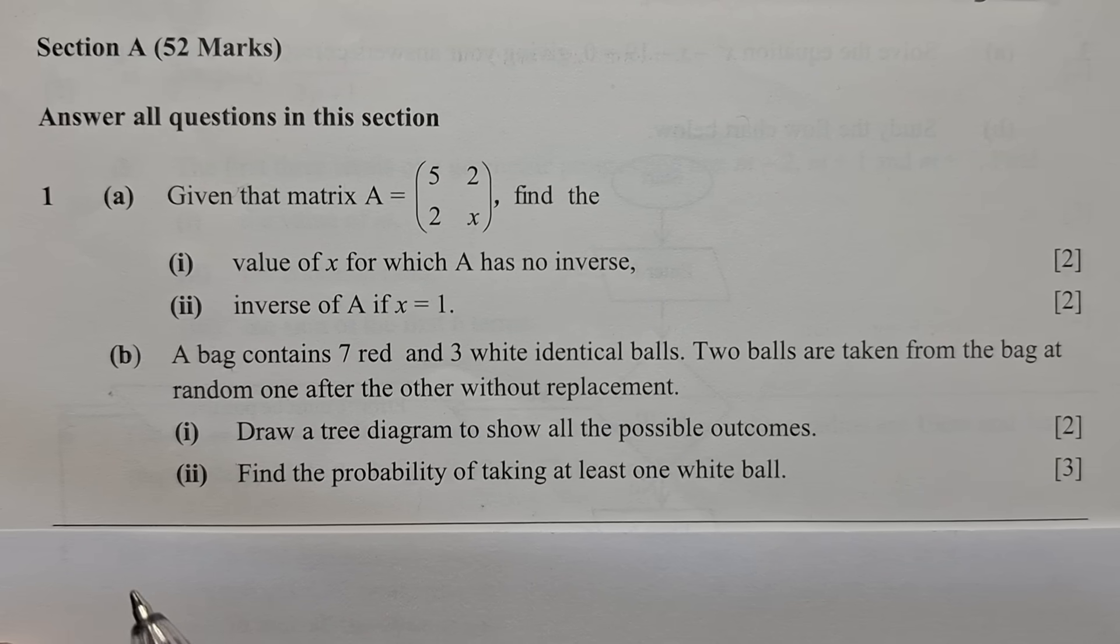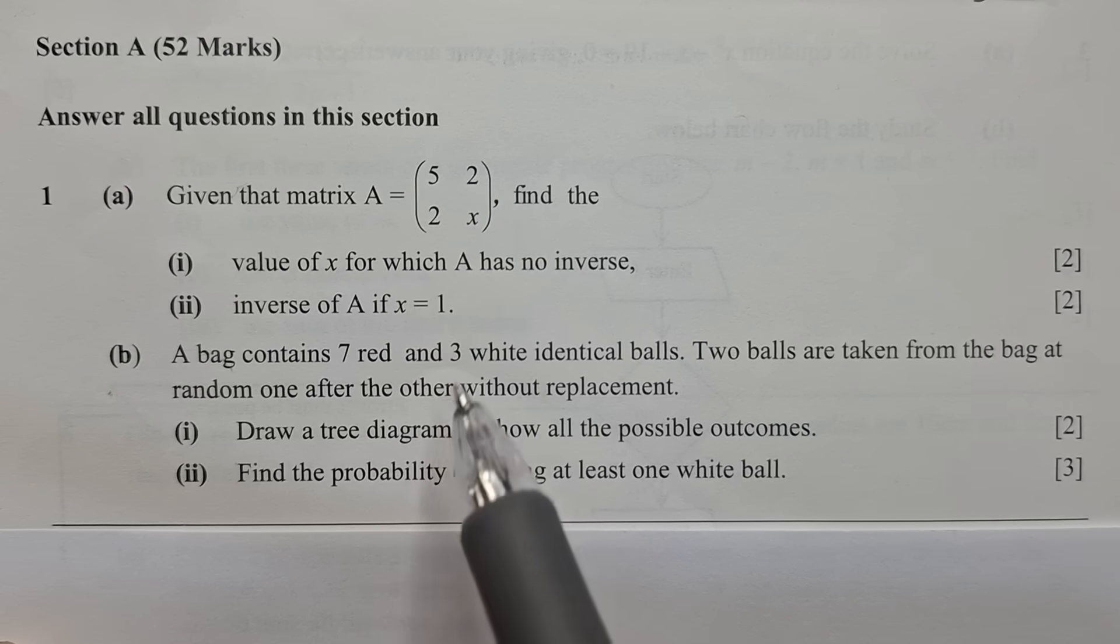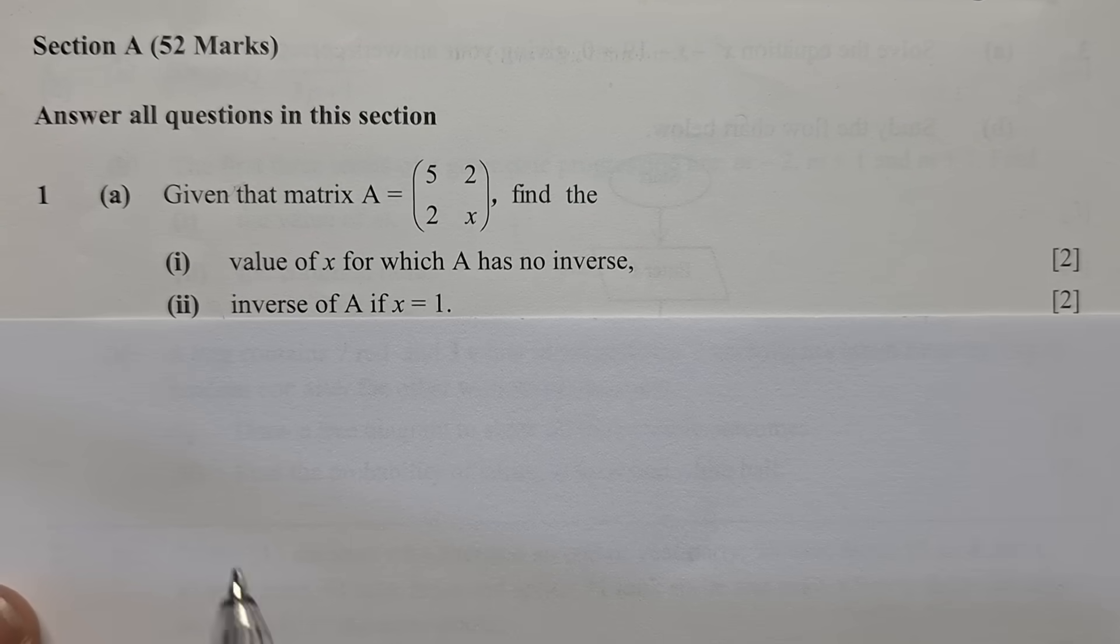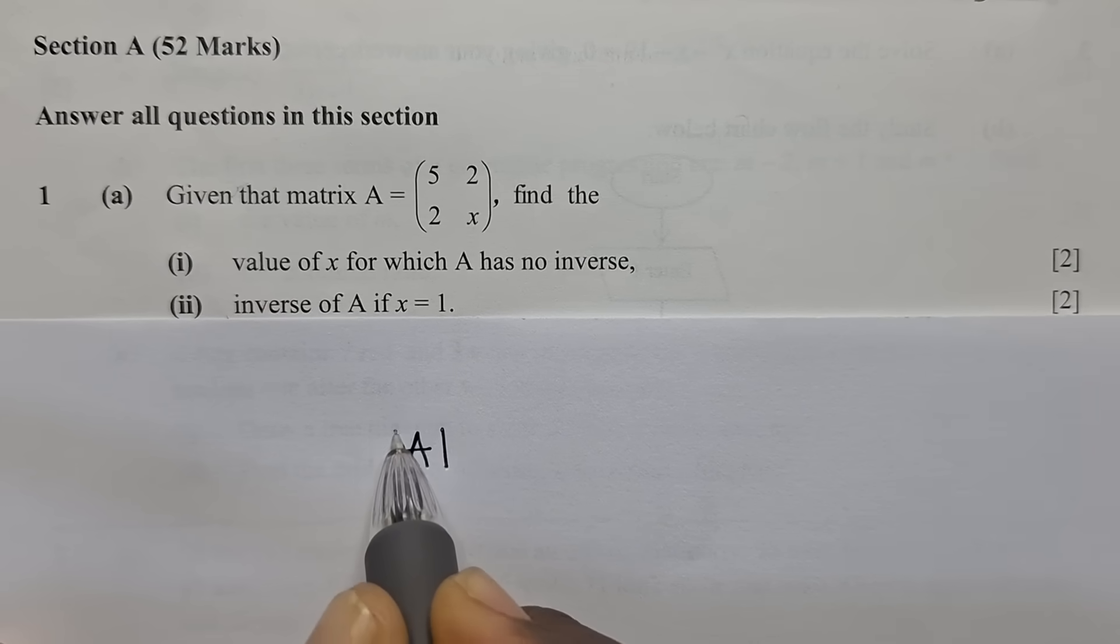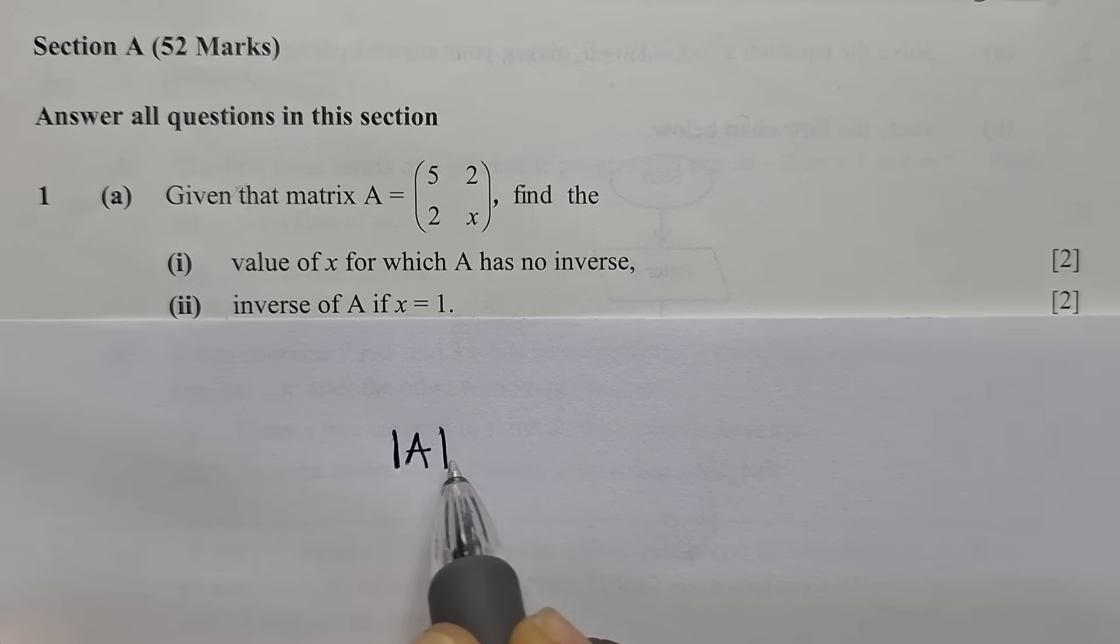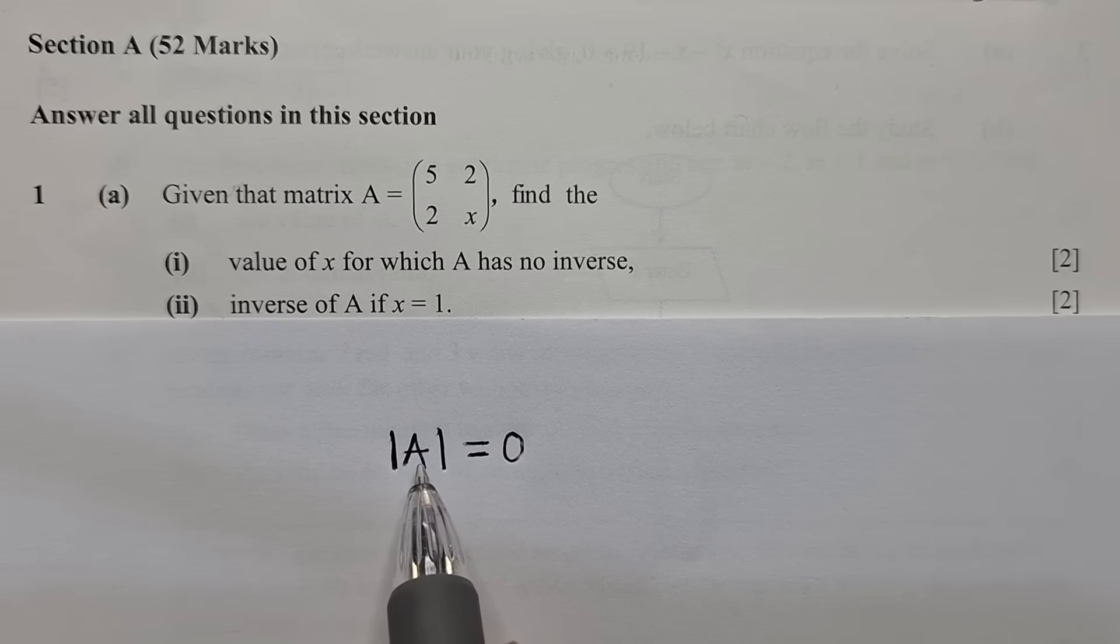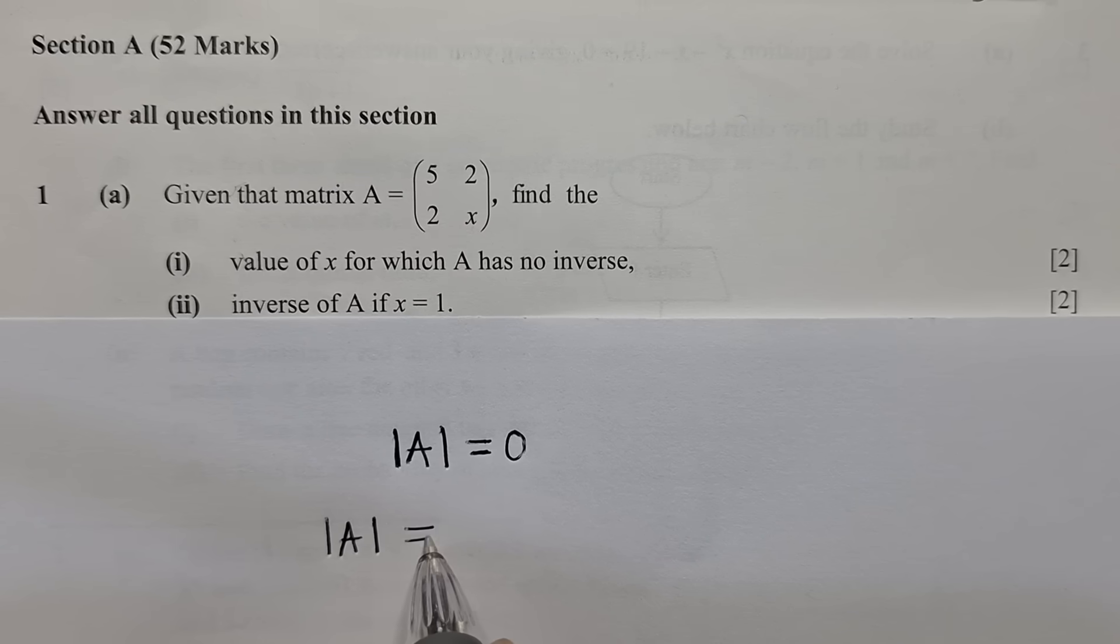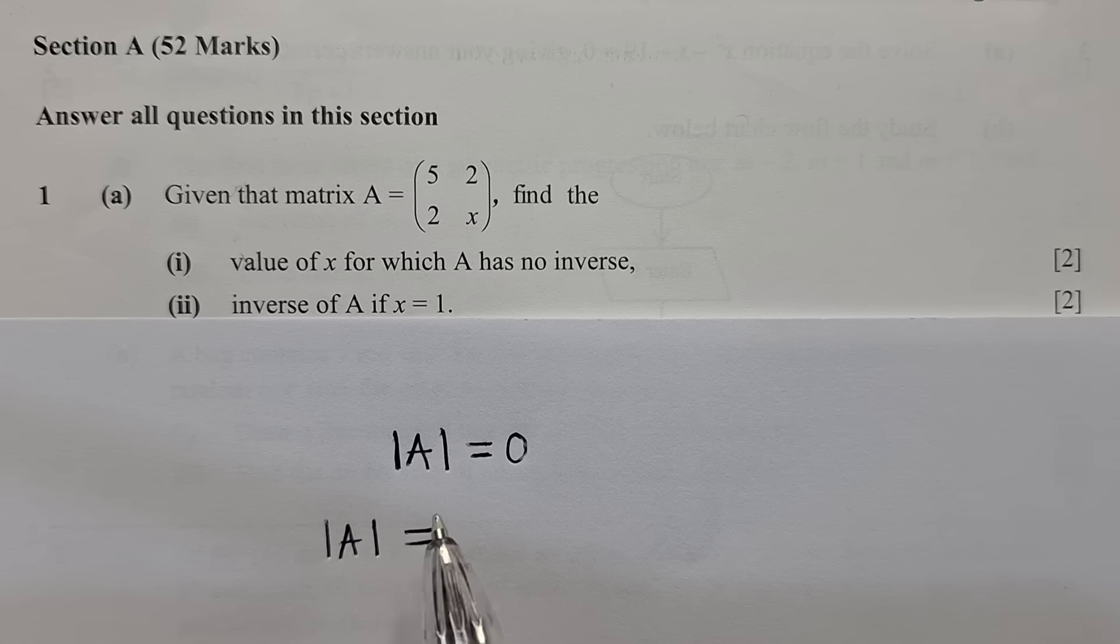This is very important to understand. If they say this matrix A has no inverse, meaning the determinant of matrix A should be equal to 0. So now how do we get this determinant? We know that determinant of matrix A can be found by multiplying the major diagonal minus multiplication of the minor diagonal.